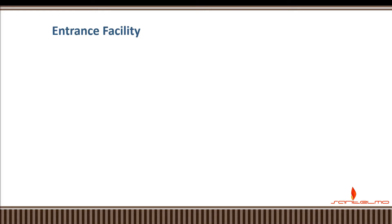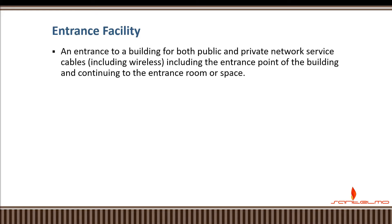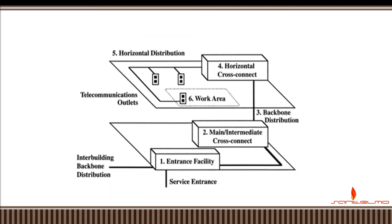The first area is the entrance facility. The entrance facility is an entrance to a building for both public and private network service cables, including wireless, including the entrance point of the building and continuing to the entrance room or space in every communication or network infrastructure. The horizontal cabling, telecom outlets, work area, backbone, intermediate, and main cross-connects should all start at the entrance facility.